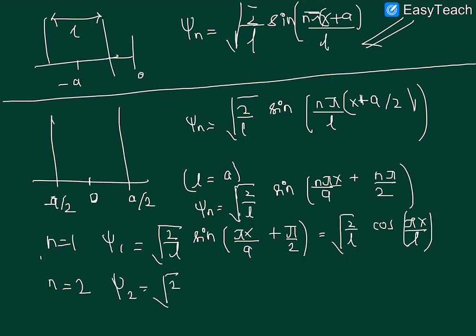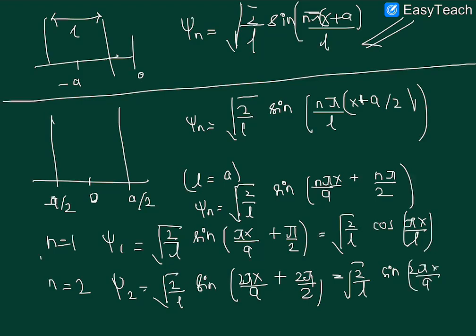The first excited state is n = 2: ψ_2 = √(2/a) sin(2πx/a + π). Since sin(π + 2πx/a) = -sin(2πx/a) ... well, the result gives ψ_2 = √(2/a) sin(2πx/a).